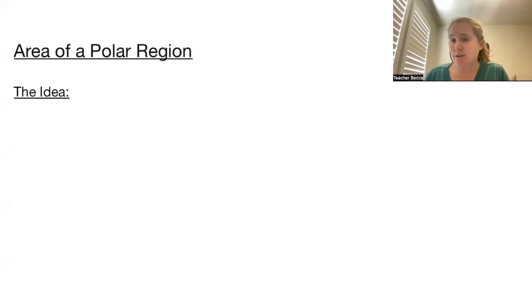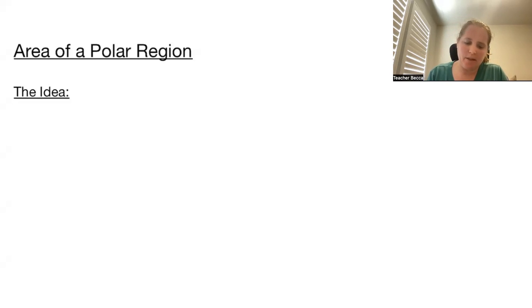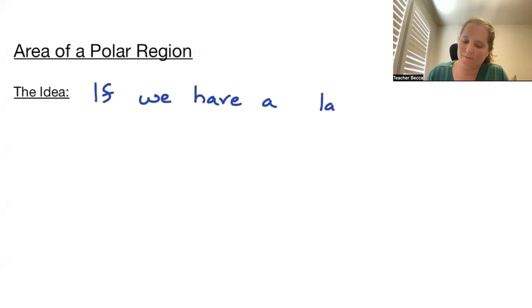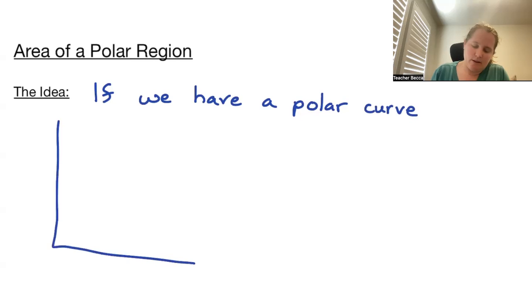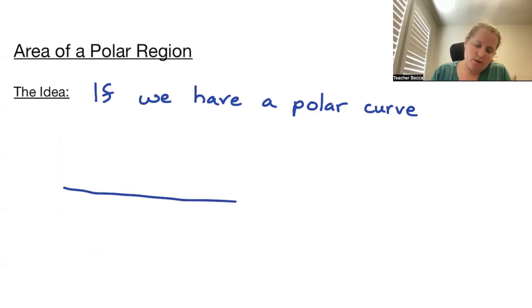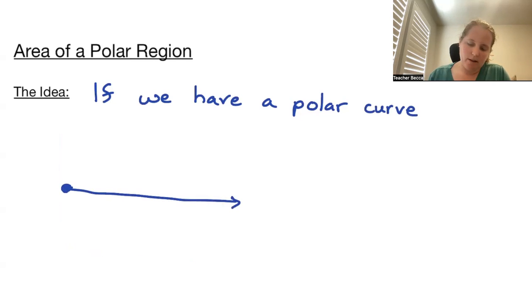Welcome to area of a polar region. This is a little different from how we've done area before. Instead of area under a curve, we'll be looking at sectors from the origin. So the idea here is if we have a polar curve — let's say we have our origin of our polar curve on the theta equals zero line — let's just do a basic circle.